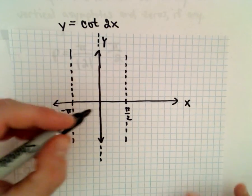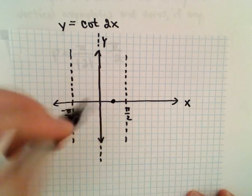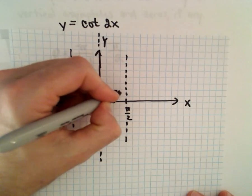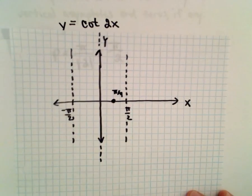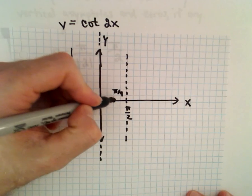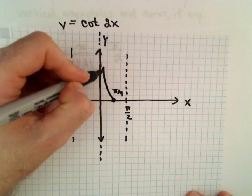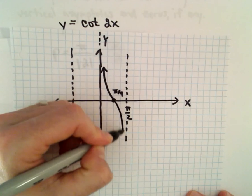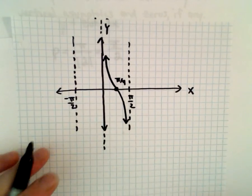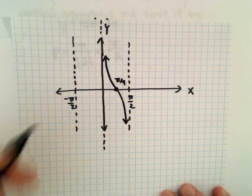Now cotangent, if we take the point in between the asymptotes, so this would be pi over 4, it still has that same basic shape as cotangent. It'll increase as we get close to the y-axis, and then it'll start decreasing down to negative infinity as we approach pi over 2.